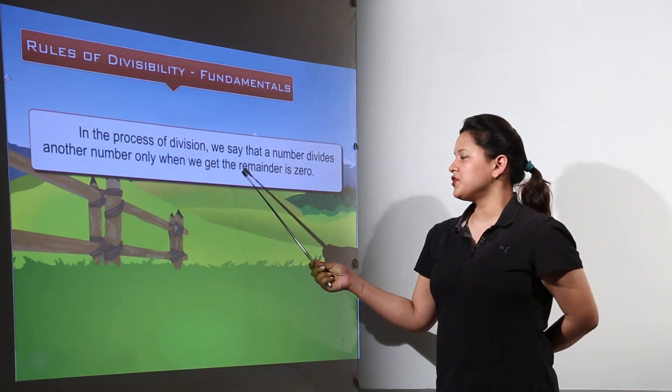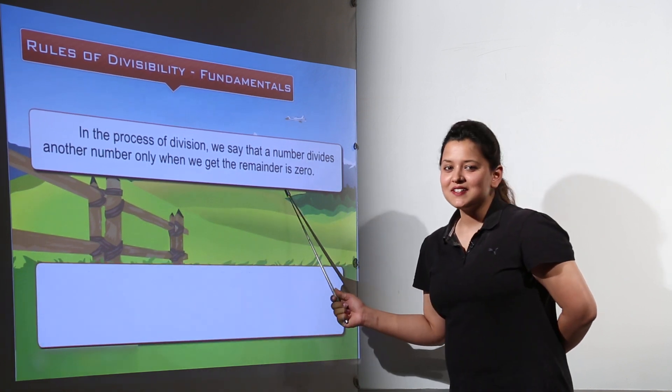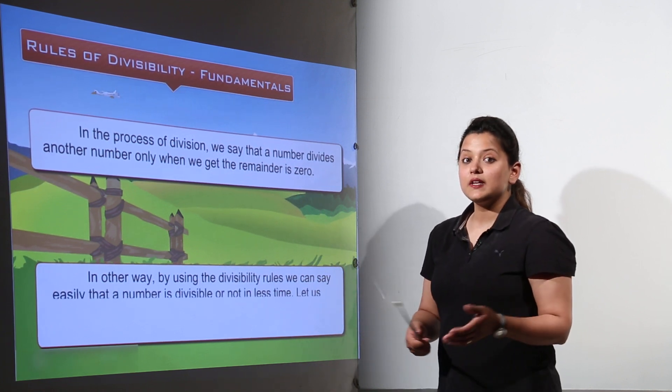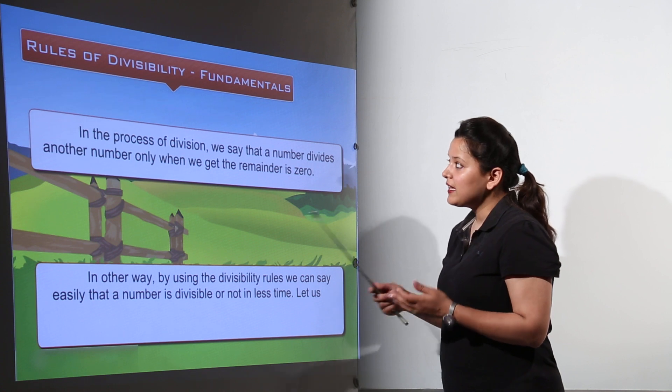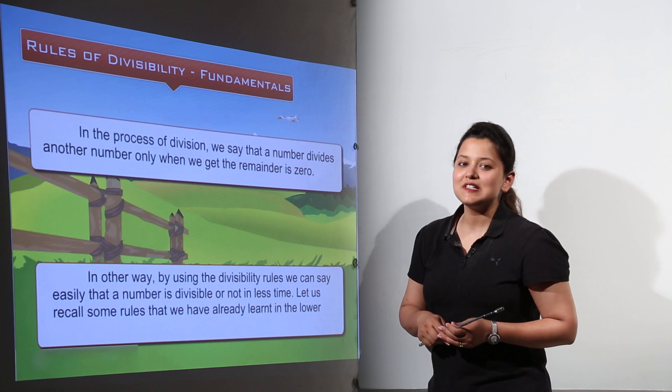In the process of division, we say that a number divides another number only when the remainder is zero. But there are other ways to analyze this, right? Those ways are actually the rules of divisibility that we're going to learn.